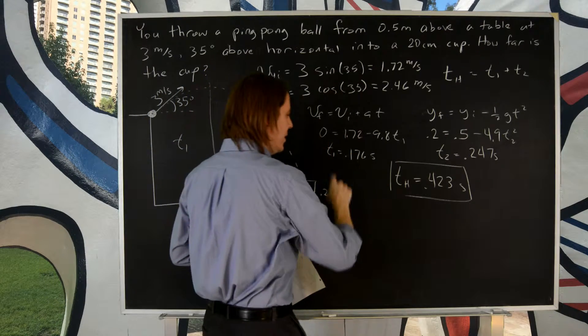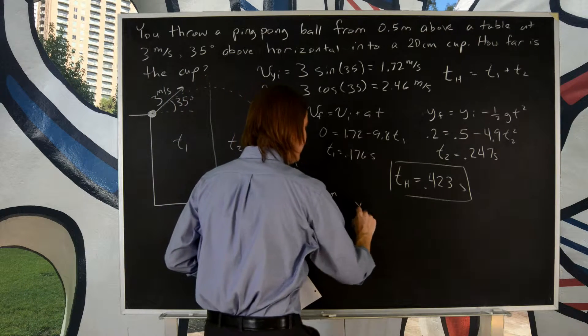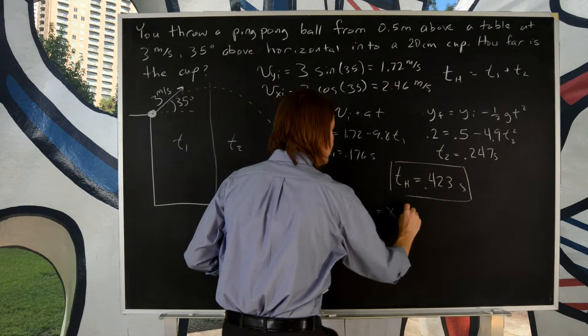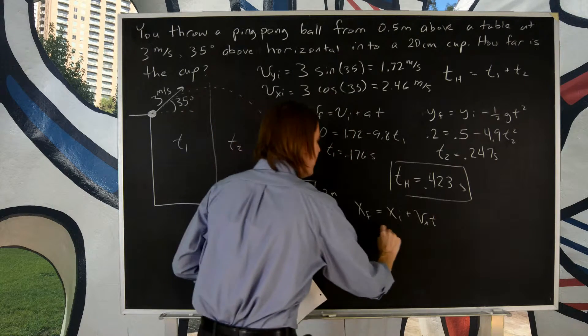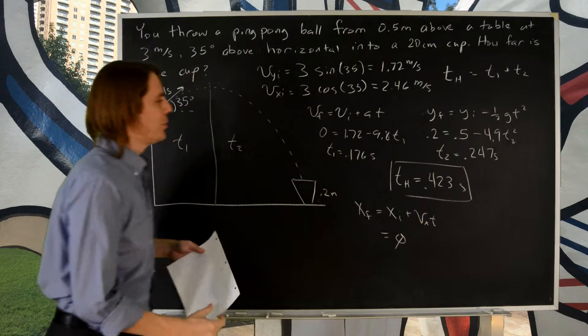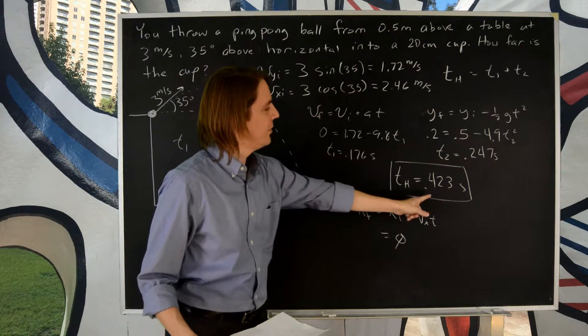you're going to say motion with constant velocity. That is that the X final equals the X initial plus VX T. The final is what we're looking for. The initial is 0. Really, we're just multiplying our X velocity that's constant times this time. It's really all we're doing.